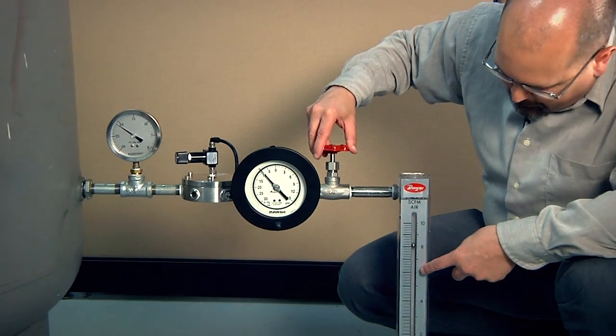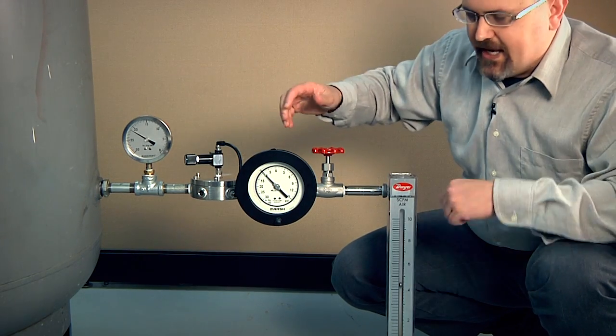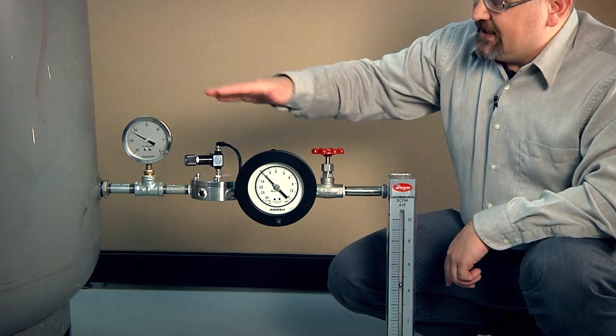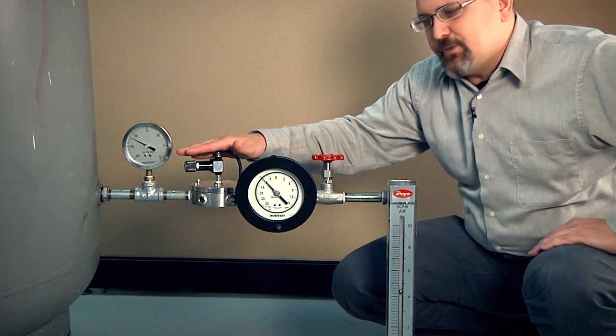The system flow can vary. Different things can happen in your system to make that happen. But the vacuum pressure is dictated and held by the vacuum regulator, the Equilibar vacuum regulator.